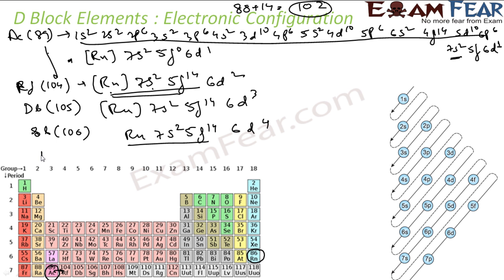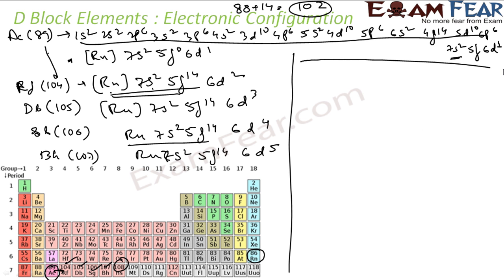Same thing for Bohrium 107. 102 electrons are being taken care by this, so 5 electrons will come here. Same thing, you proceed here. Then we have Hassium 108. So Hassium 108, 102 is taken care by Rn 7s2 5f14. This takes care of 102, then I have 6d, so 102 is taken care by these all, 6 pending, 6 will be in d.